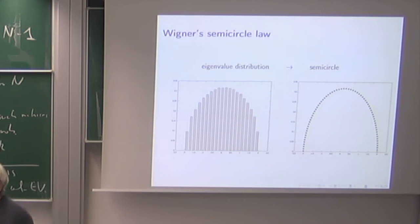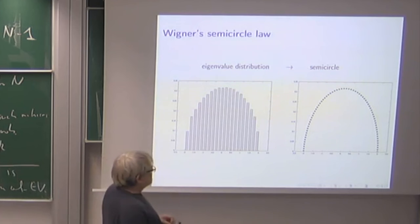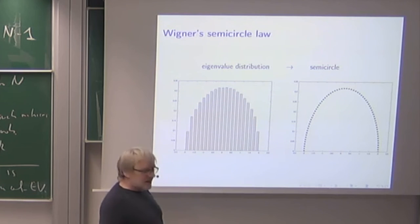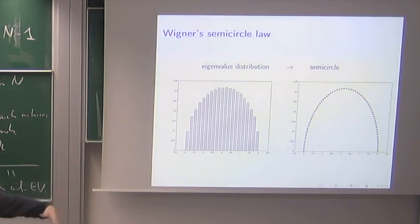And because this was really the result of Wigner to observe this and also prove this, so this is also called Wigner semicircle. Okay, so that's one of the first and most basic results in random matrix theory. And this is something which we are going to understand in the next couple of lectures.